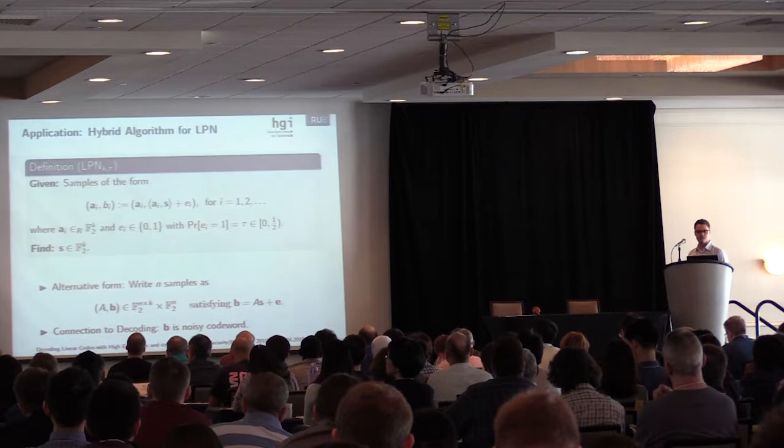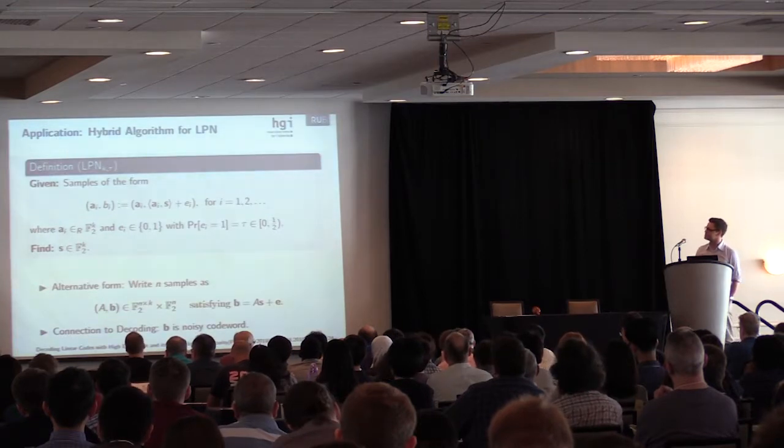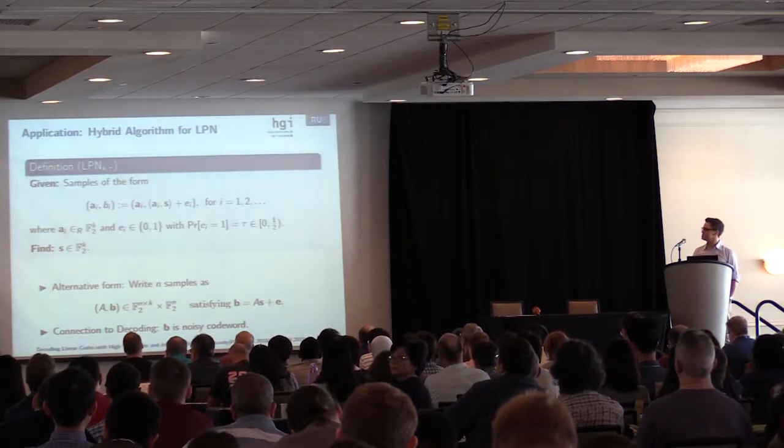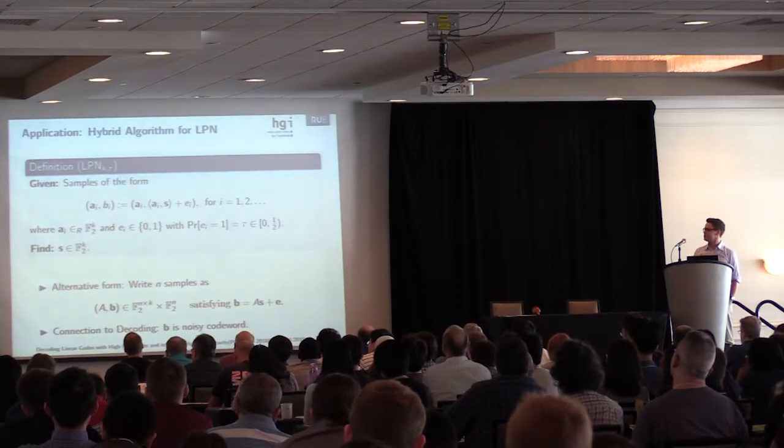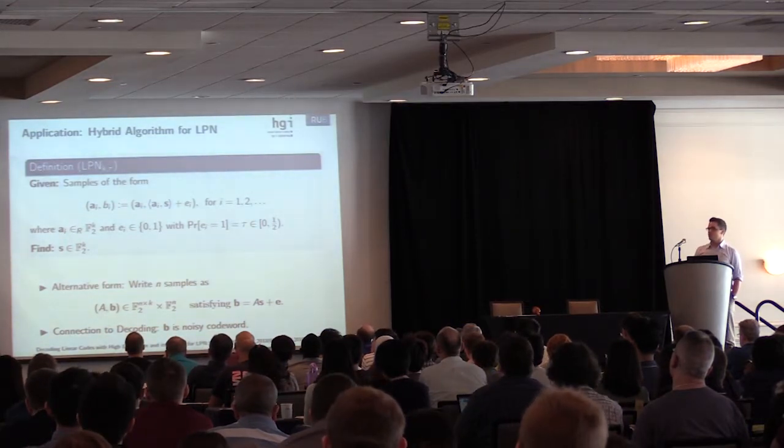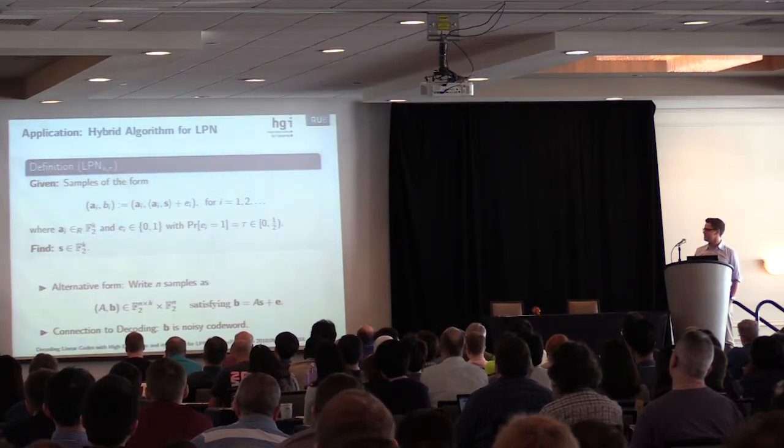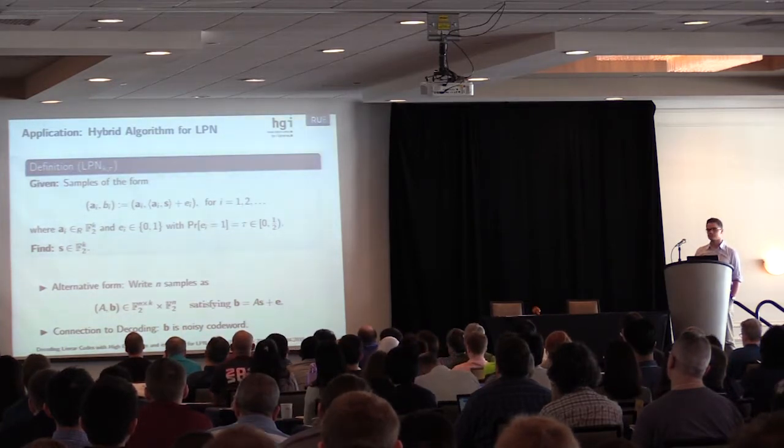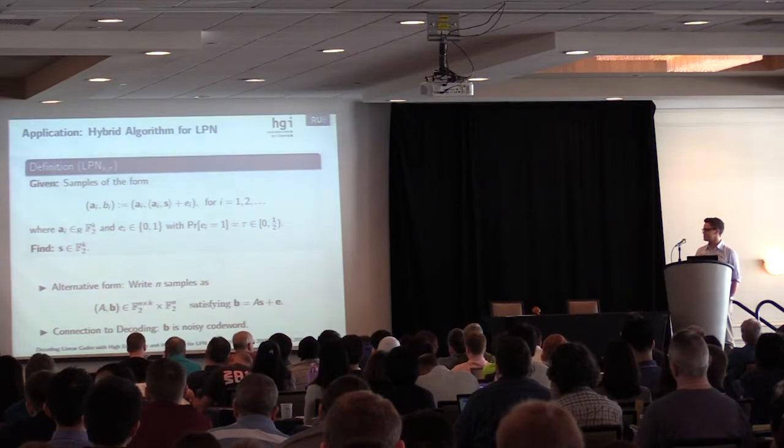One application for crypto is the hybrid algorithm for LPN. First let's recall what LPN is. In this problem we are given samples of the form a_i and b_i where a_i is some vector of length k and b_i is simply the sum of a_i times s plus e_i, where s is our secret we want to find which is also a vector of length k and e_i is some error which is one with probability tau. If we now have many such samples we can write this as a matrix A and some vector b where b satisfies A times s plus e.